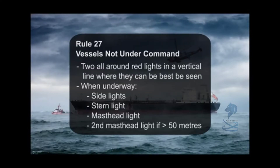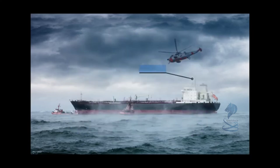Rule 27, Vessels Not Under Command: two all-around red lights in a vertical line where they can best be seen. When underway: side lights, stern light, masthead light, and a second masthead light if length overall is greater than 50 meters. Day shape: two balls in a vertical line, one above the other.